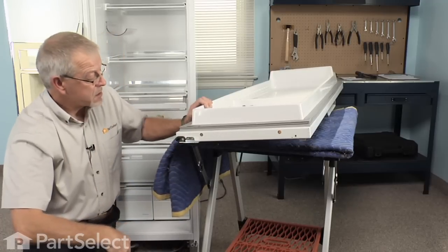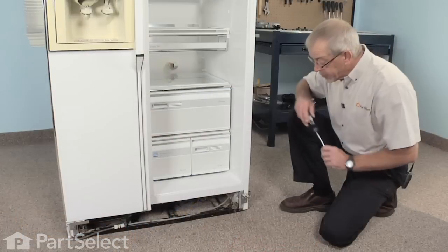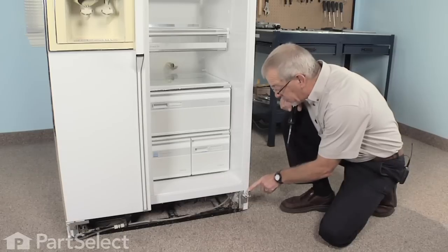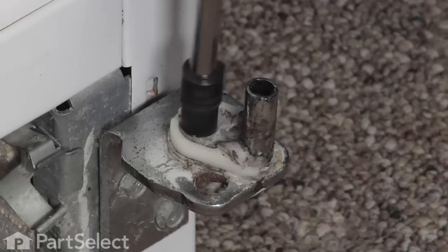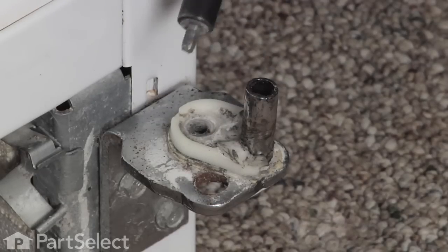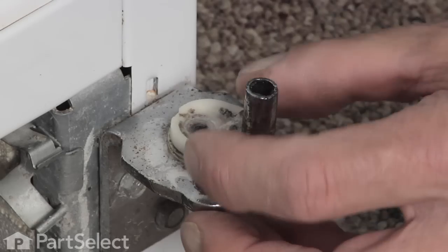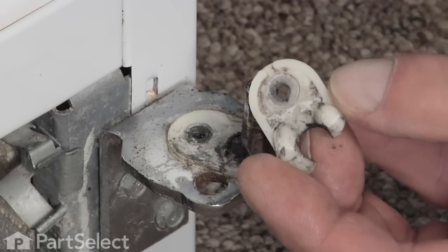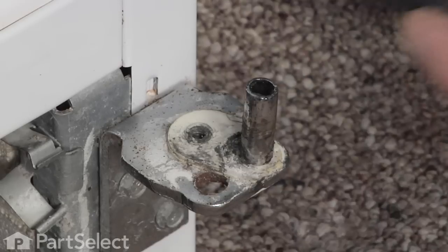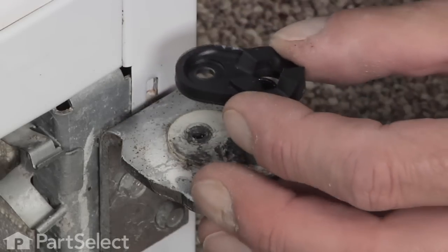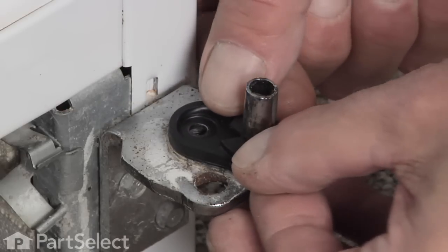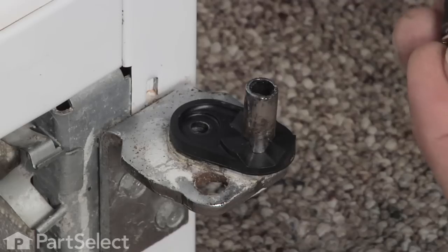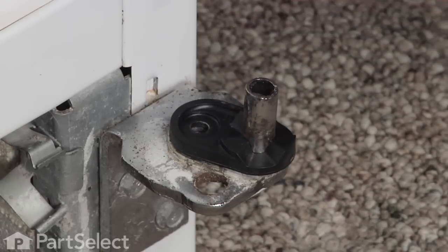Now we're ready to replace the lower door cam. To replace the bottom cam we simply need to remove this quarter inch hex head screw. Lift the old cam off of the pin, slide the new cam over it, line up the screw hole, and replace it with the screw supplied with the kit.